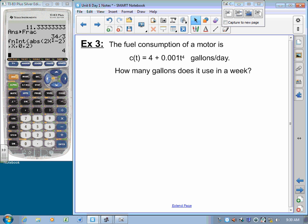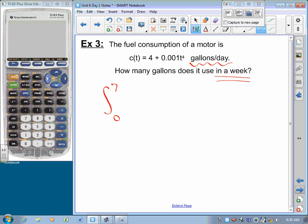I want to know how many gallons it uses in a week. That's 7 days. I'm measuring in gallons per day, but I've got to go 7 days. So, I'm going to integrate the consumption function. That's 0 to 7 of C(t).